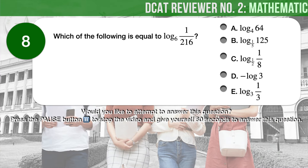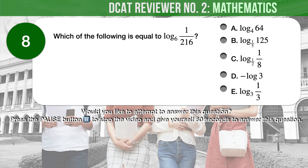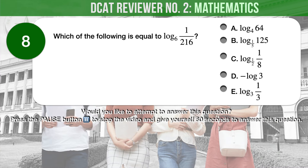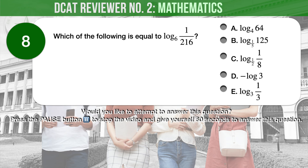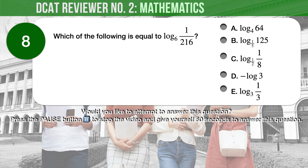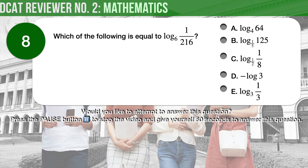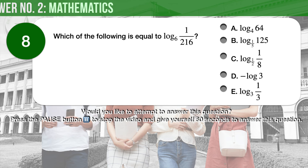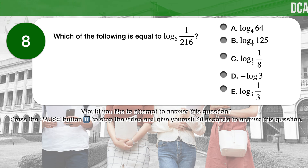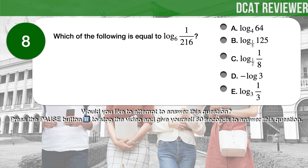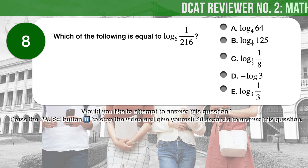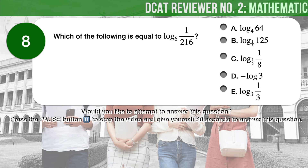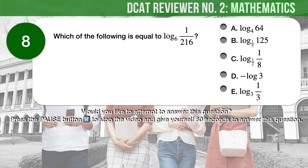Question number 8. Which of the following is equal to logarithm base 6 of the quantity 1 over 216? A. Logarithm base 4 of 64. B. Logarithm base 1 fifth of 125. C. Logarithm base 1 half of 1 over 8. D. Negative logarithm of 3. E. Logarithm base 3 of 1 third.